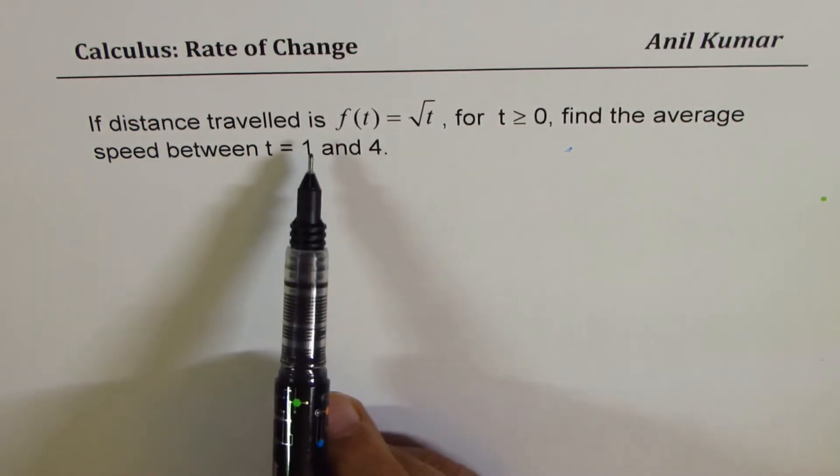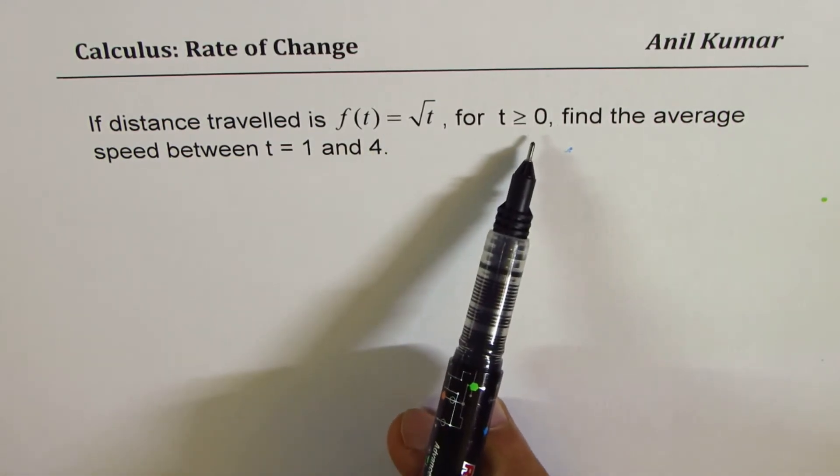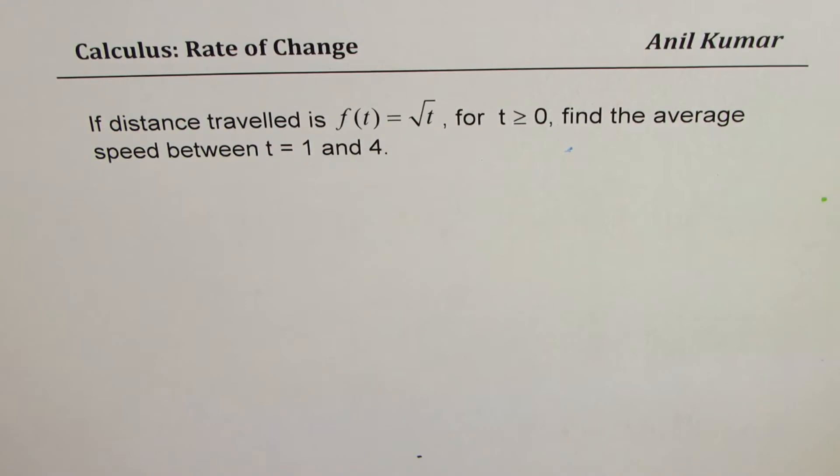If distance travelled is f(t) = √t for t ≥ 0, find the average speed between t = 1 and 4.